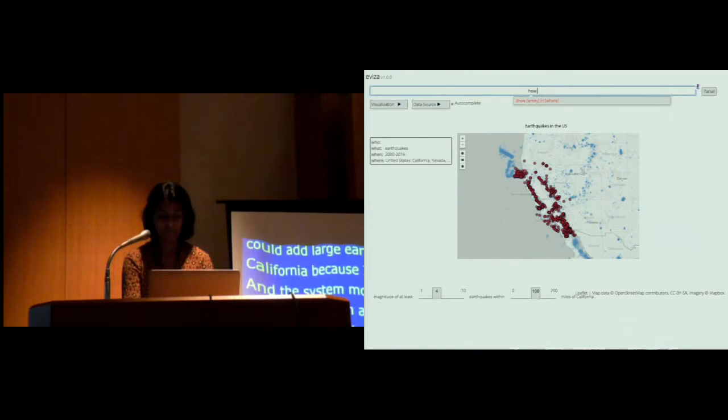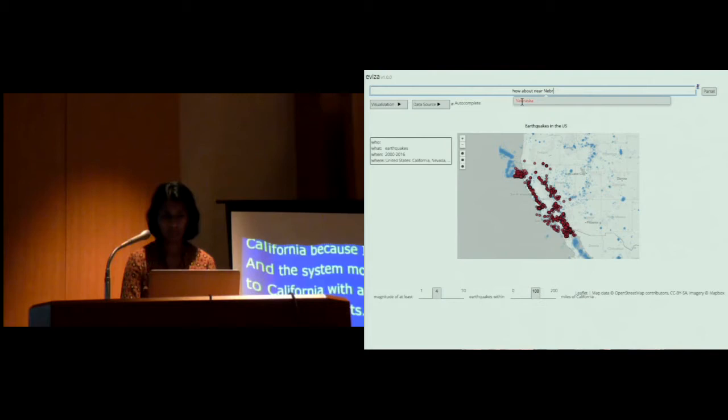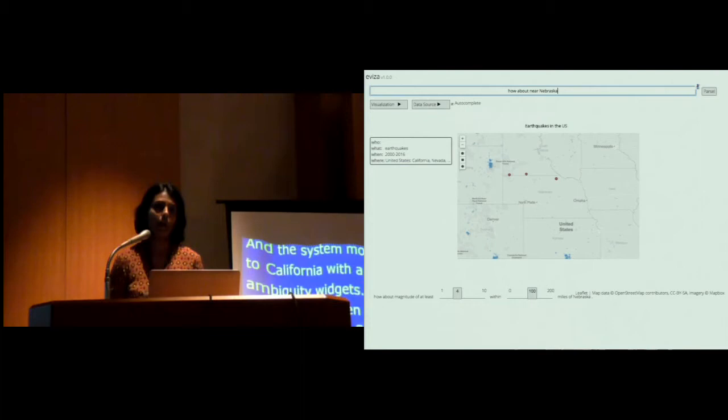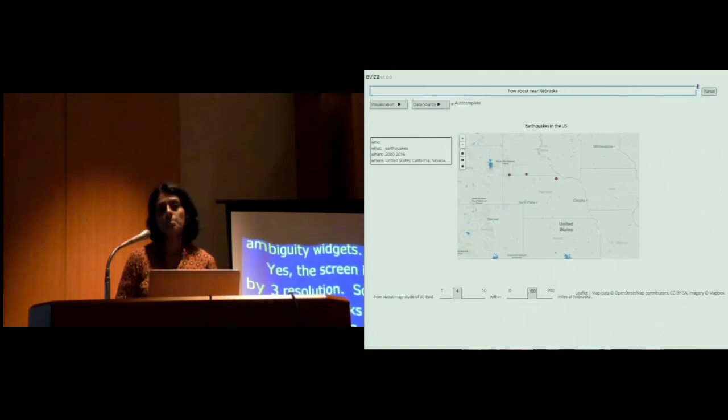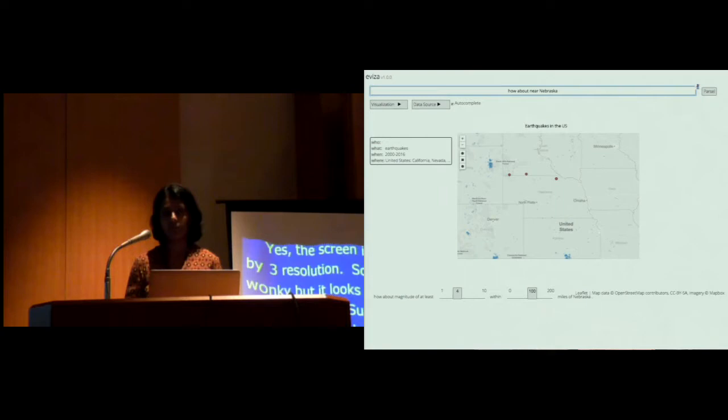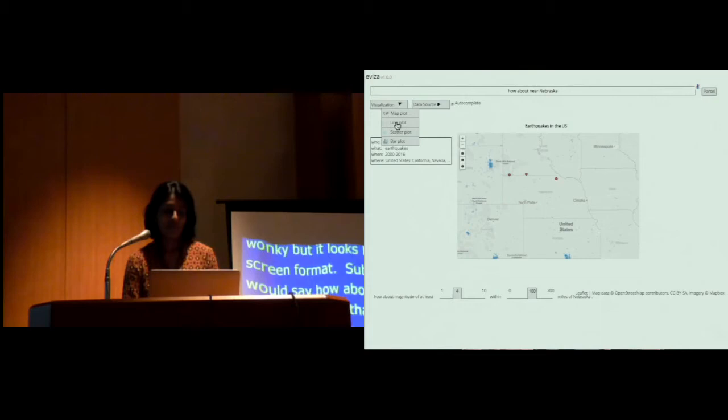Moving on, I could add large earthquakes near California, because I'm from California. And the system modifies that to zoom into California with a couple of more ambiguity widgets. The screen is not resolved to a four-by-three resolution, so it looks a little wonky, but it looks better on a widescreen format. So following on some subsequent queries, I could say, how about near Nebraska? So the system saw that previously I was interested in large earthquakes, so even though I didn't explicitly mention that in this query, it carries this context from the previous queries and adds it to this, a feature that we call pragmatics.